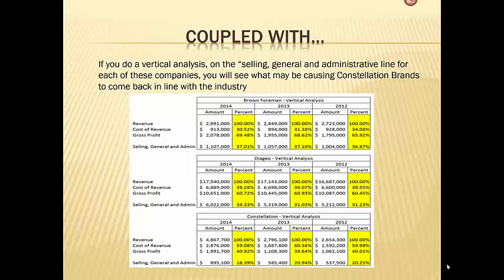Now this doesn't mean that Constellation Brands is a terrible company or that they shouldn't be invested in. It just means that as an investor you should know a lot more about how exactly they operate and why the numbers look like they do. By doing some cursory investigations in their SEC reporting, we can see they have some higher bottling costs, glass costs, and they had an unusual event happen in 2014 that had to do with a revaluation of an acquisition.